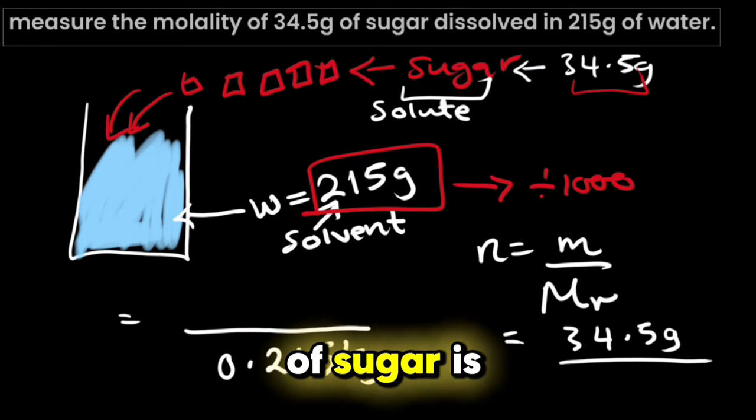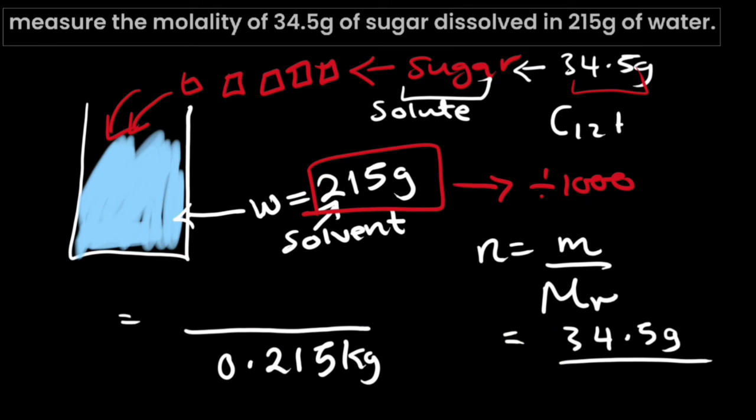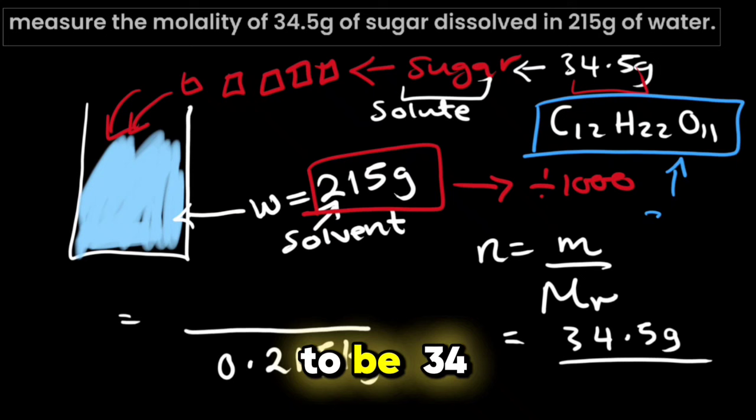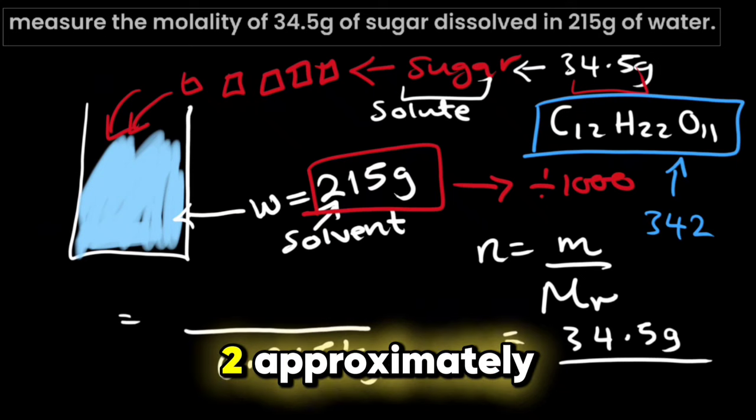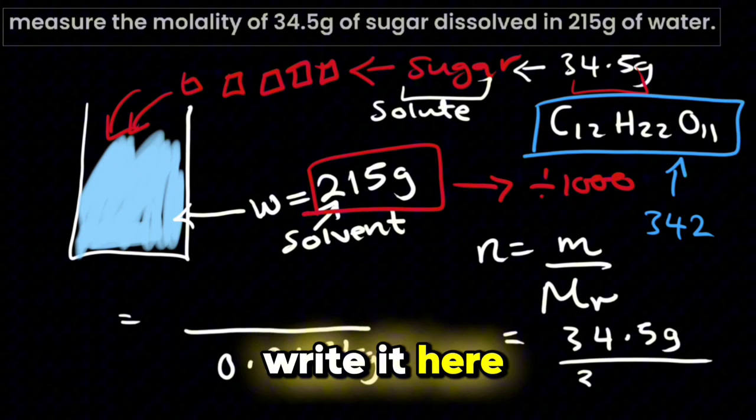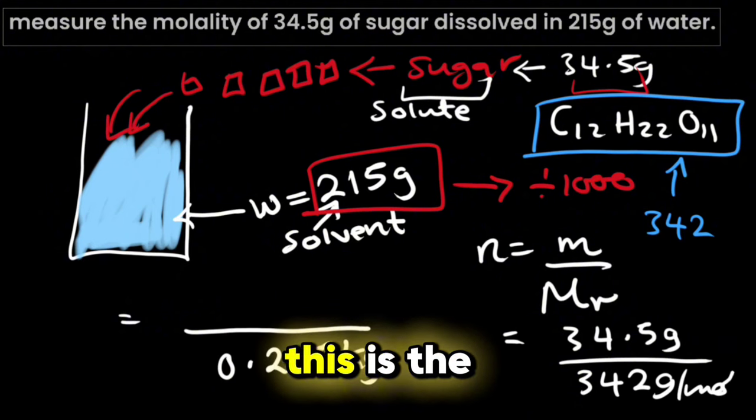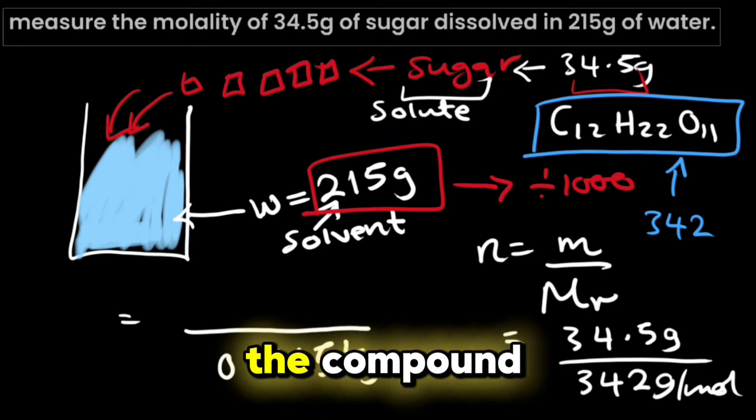Now the formula for sugar is C12H22O11. When you find the molar mass of this compound you will get it to be 342 approximately. So we will write it here 342 grams per mole. This is the molar mass of the compound.